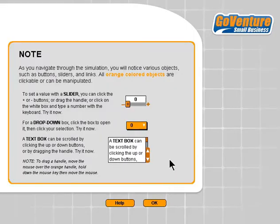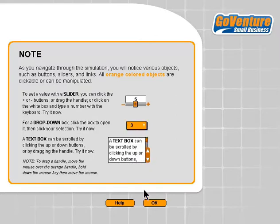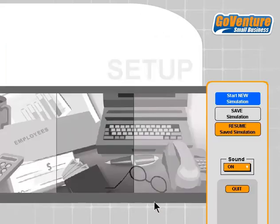One of the things you'll notice is that anything colored orange is clickable. We have sliders that we can change numbers with, drop-down selectors, text boxes that we can scroll, and buttons that we can click. So anything orange is clickable.